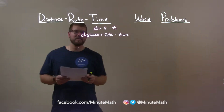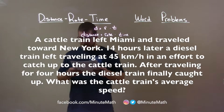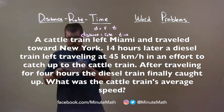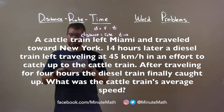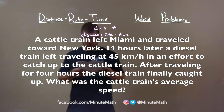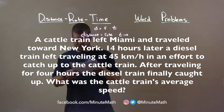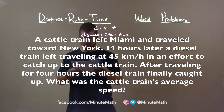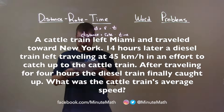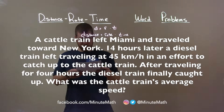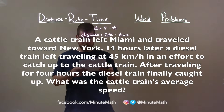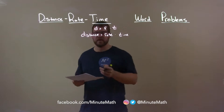Here's the word problem: A cattle train left Miami and traveled toward New York. 14 hours later, a diesel train left traveling at 45 kilometers per hour in an effort to catch up to the cattle train. After traveling for four hours, the diesel train finally caught up. What was the cattle train's average speed?